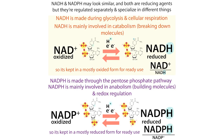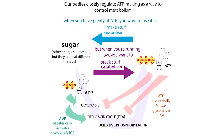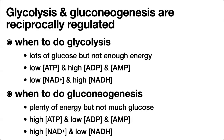Another sign of not enough energy would be low NAD+ and high NADH. Alternatively, if we had enough energy but not much glucose, we'd have the opposite conditions and would want to make glucose through gluconeogenesis. You could also break down glycogen, but we'll talk about that later. For now, let's focus on glycolysis and gluconeogenesis.